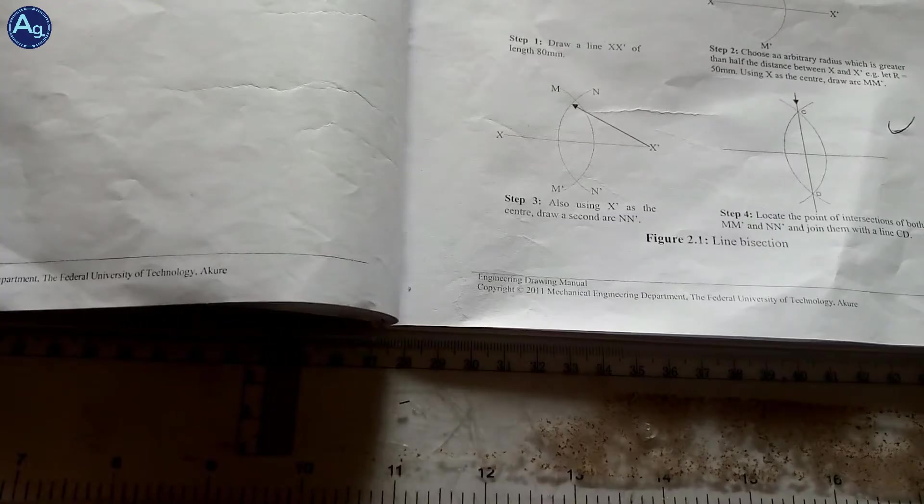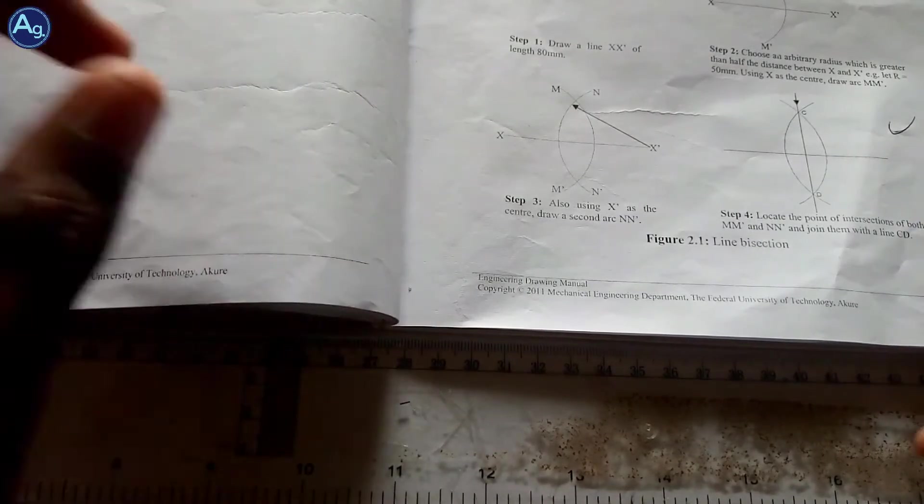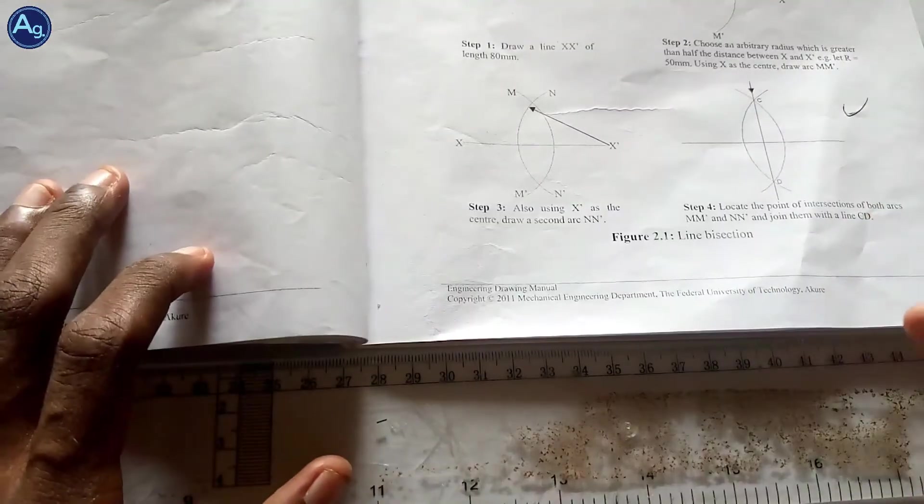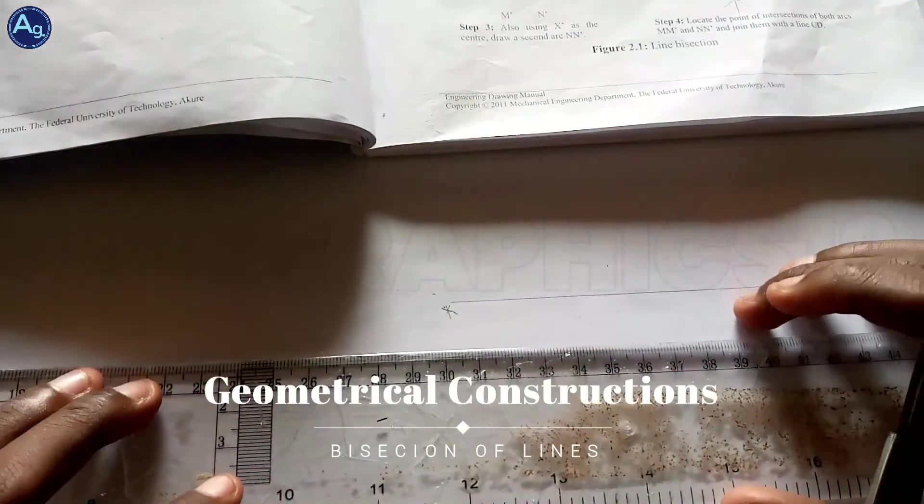After drawing your borderlines, make sure you draw your title block at the bottom right of your drawing sheet. Our first topic is Geometrical Constructions. First of all, draw your lines as I've drawn.